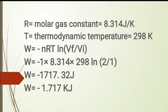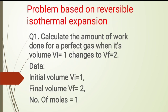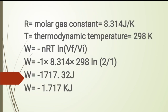We want the work done in kilojoules, so converting: W = −1.71732 kJ. This is the work for the isothermal reversible expansion. We have thus covered free expansion, adiabatic expansion, and isothermal reversible expansion.